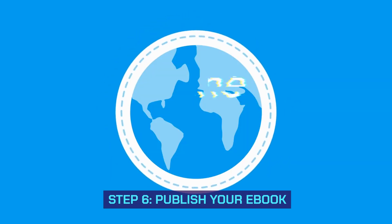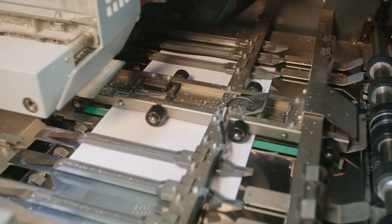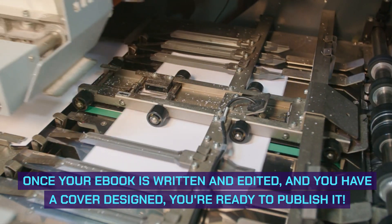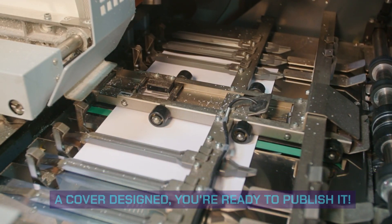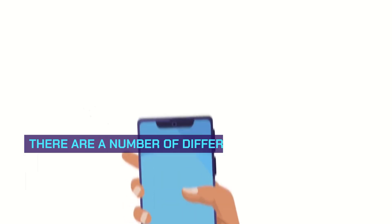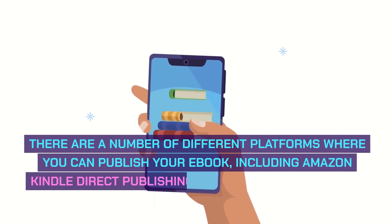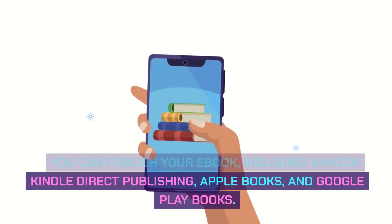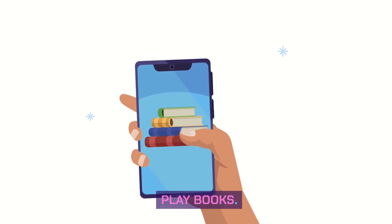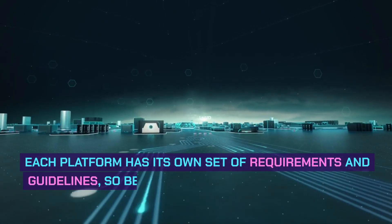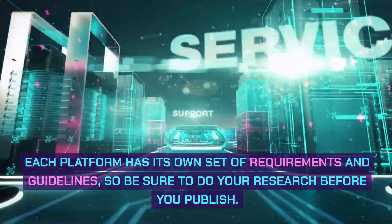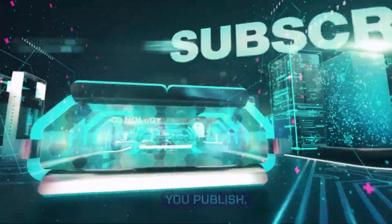Step 6: Publish your ebook. Once your ebook is written and edited, and you have a cover designed, you're ready to publish it. There are a number of different platforms where you can publish your ebook, including Amazon Kindle Direct Publishing, Apple Books, and Google Play Books. Each platform has its own set of requirements and guidelines, so be sure to do your research before you publish.